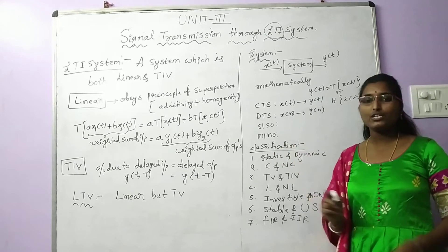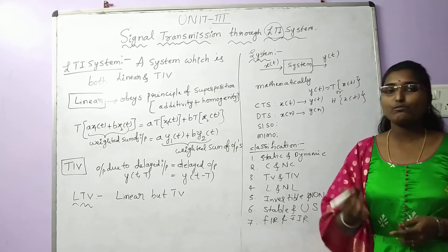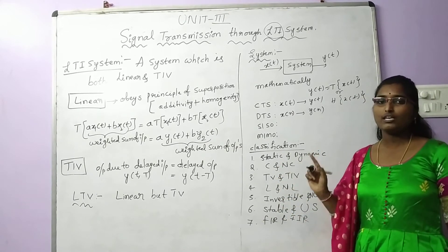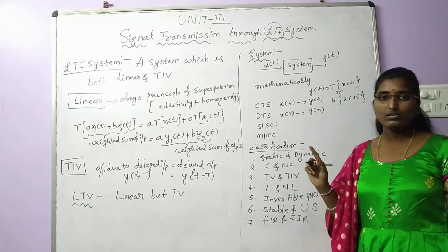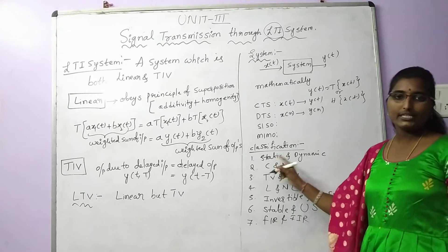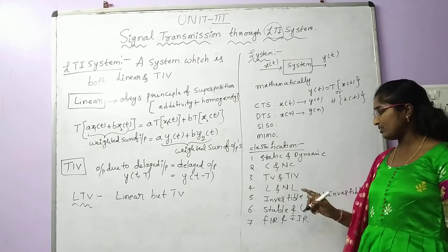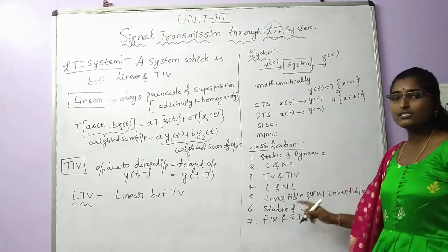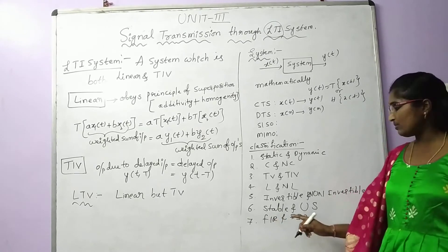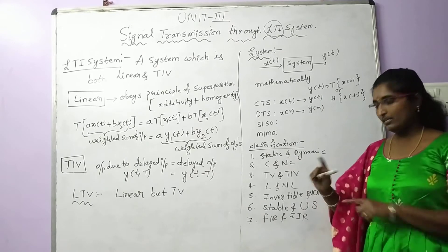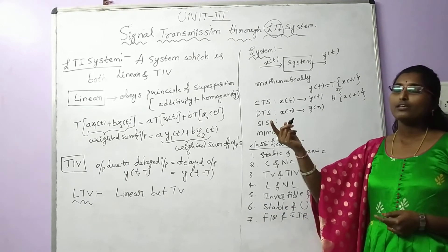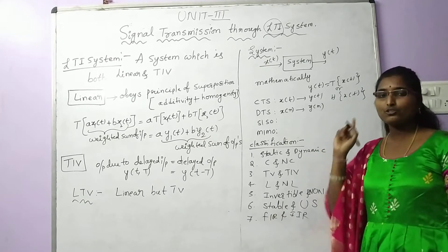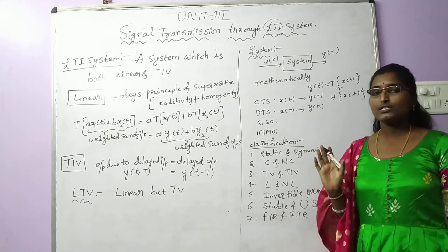We have also seen the classification of systems in brief in the first unit, with relevant examples. The seven classifications are: static and dynamic, causal and non-causal, time variant and time invariant, linear and non-linear, invertible and non-invertible, stable and unstable, and FIR and IIR filter systems. FIR and IIR are not part of signals and systems — you will study them in detail in the third unit of your DSP subject.